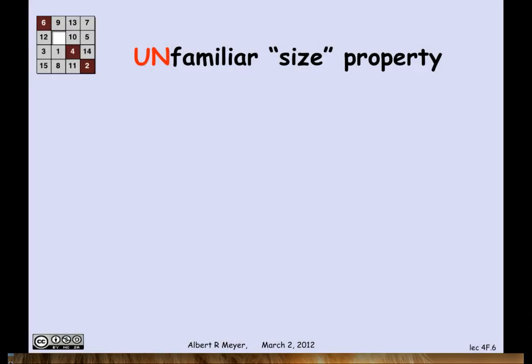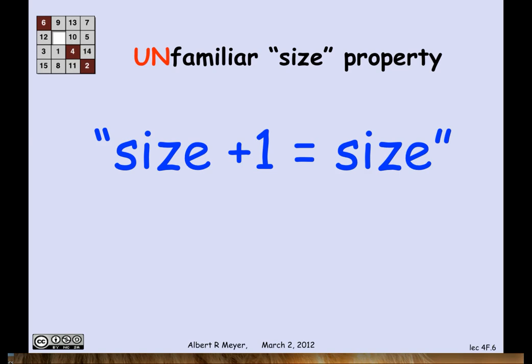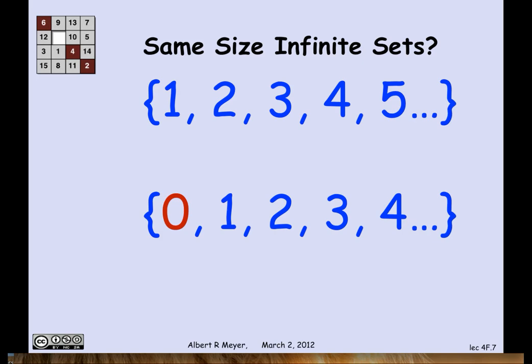So now we come to an unfamiliar property of size. If we believe in Cantor's idea, then infinite sets have an unfamiliar property that really distinguishes them from finite sets. Namely, if you add 1 to a set, it stays the same size, if it's infinite. So for infinite sizes, size plus 1 equals size.